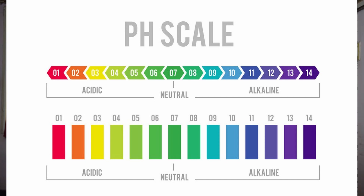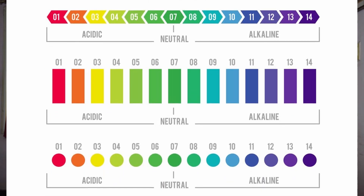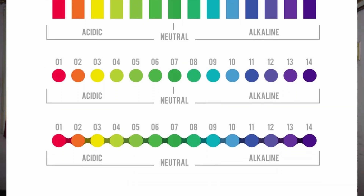Normally tap water flows through metal pipelines on the outside. So sometimes we have to increase the pH value. One side is acidic water, and the other is soft alkaline water. Normally RO water has a pH value of around 7.